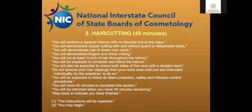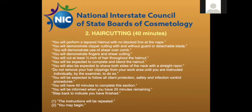With the haircutting portion of the exam — 40 minutes — the proctor reads to the candidates: you will perform a tapered haircut with no black line at the nape. You will demonstrate clipper cutting with and without guard or detachable blades. You will demonstrate the use of shear over comb. You will demonstrate finger and shear cutting. You will cut at least one half inch of hair throughout the haircut. You will be expected to complete and blend the haircut. You will also be expected to shave both sides of the neck with a straight razor. The instructions are always repeated twice and then candidates are told you may begin.